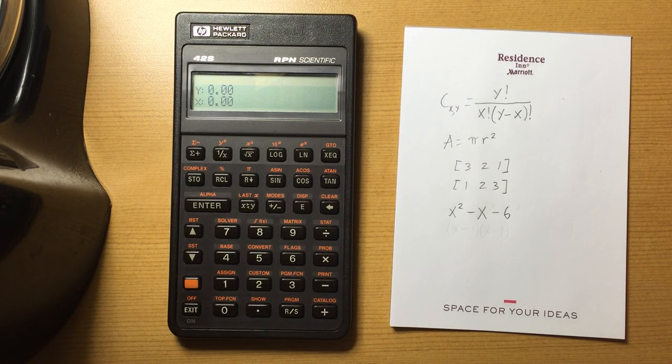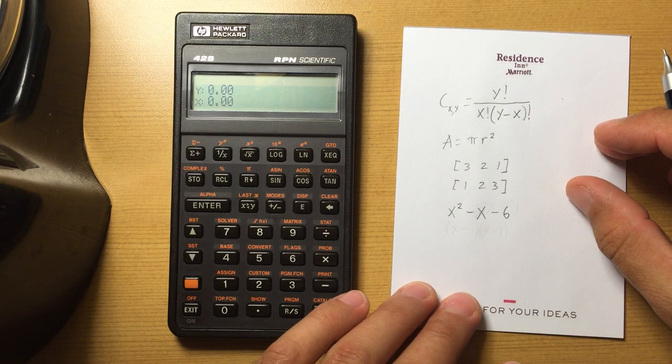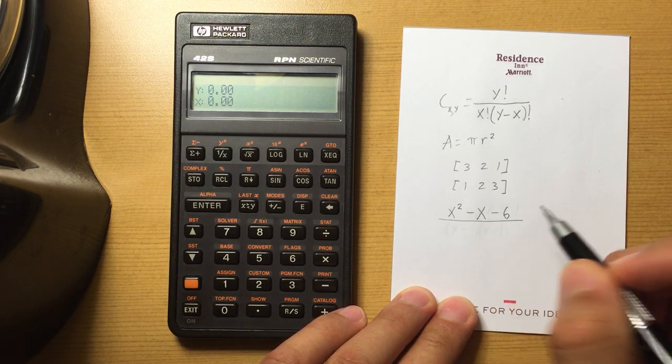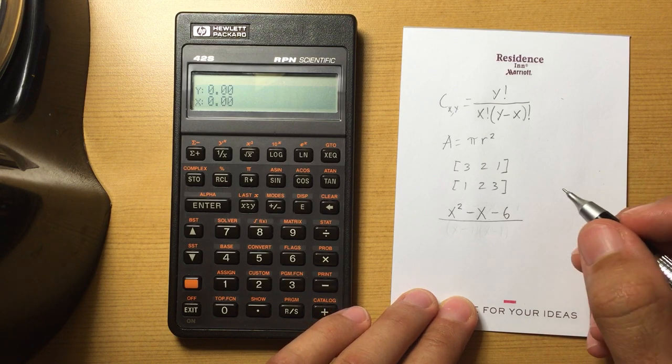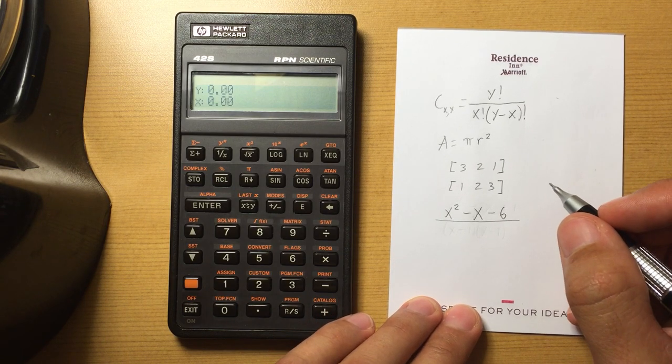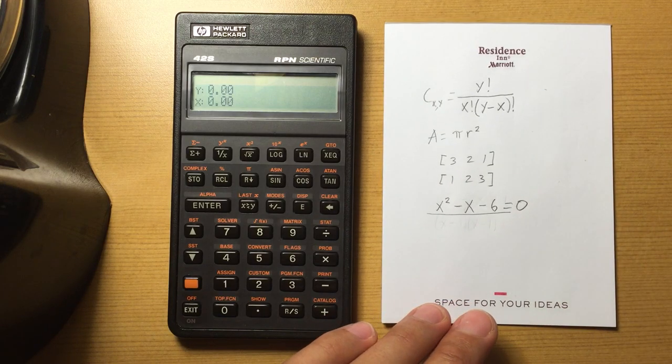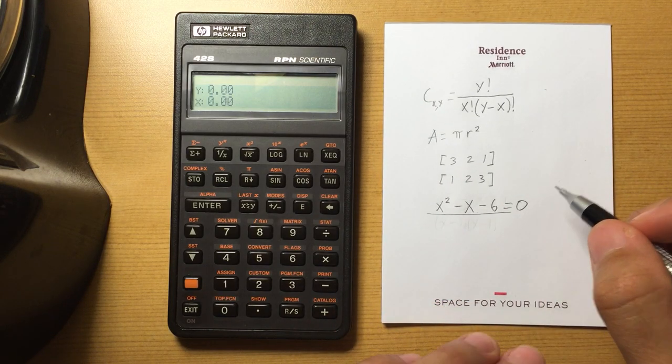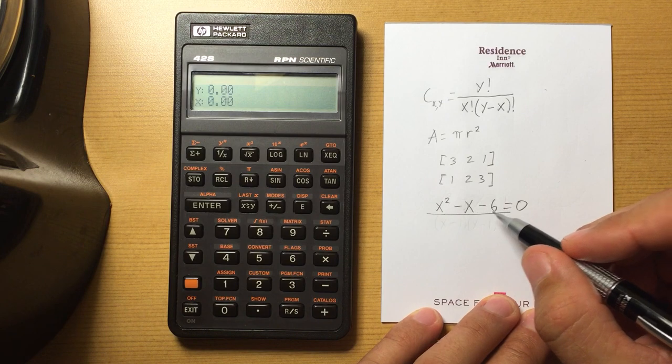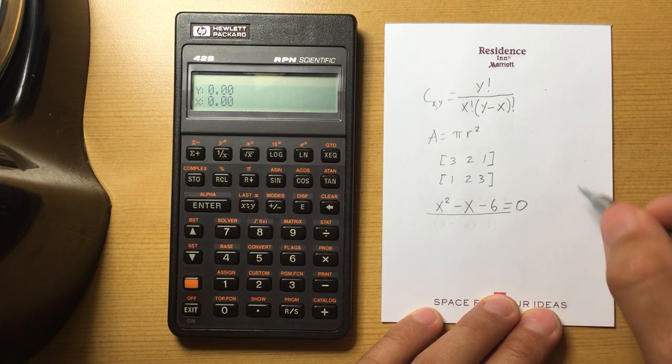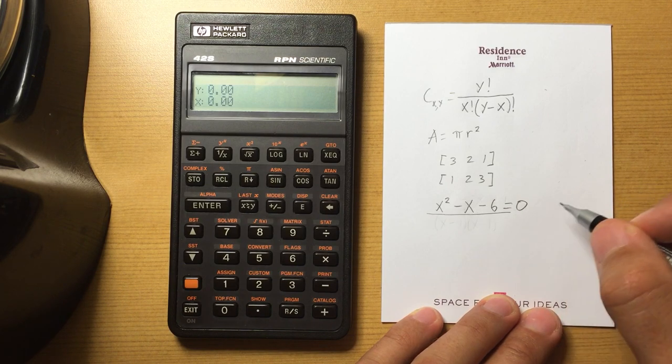So just a brief introduction to using the solver. Let's say I have this function here: x squared minus x minus 6, and I want to solve for the roots. Solver assumes everything is equal to 0, so if you have x squared minus x minus 6 equals 15, put the 15 on the other side and set that all equal to 0.